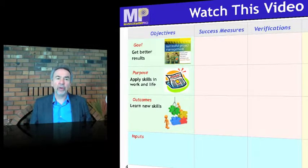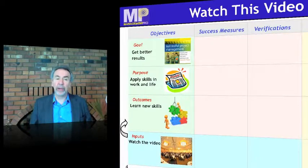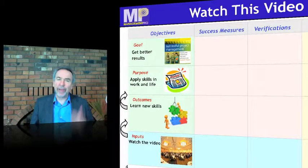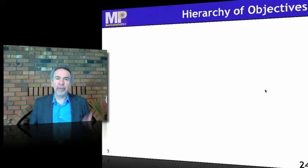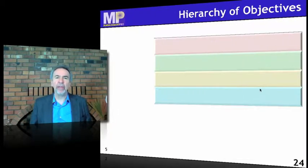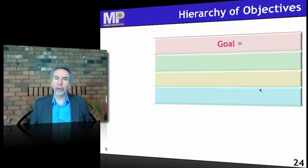How are you going to learn those outcomes? Well, you're going to watch the video. So we have a four-level relationship that says: if we do these inputs — watch the video — then we can learn new skills. If we learn new skills, you can apply them. If you apply them, you will get better results. Let's give some definitions of these levels of objectives, because it's very important in distinguishing cause-effect relationships in your strategy or your project.